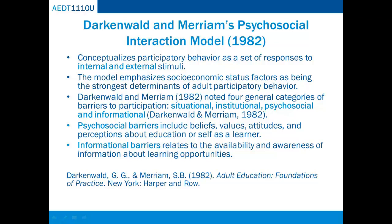Darkenwald and Merriam's Psychosocial Interaction Model conceptualizes participatory behavior as a set of responses to internal and external stimuli. The model emphasizes socioeconomic status factors as being the strongest determinants of adult participatory behavior, and proposes that the more perceived value placed on education, the higher the participation rate. Darkenwald and Merriam noted four general categories of barriers to participation: situational and institutional, similar to Cross, and psychosocial and informational.